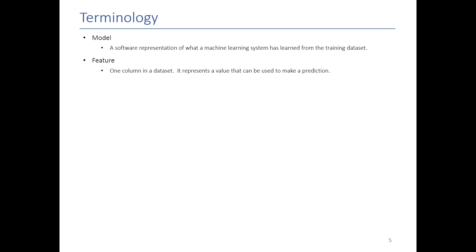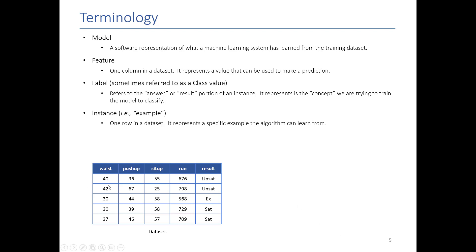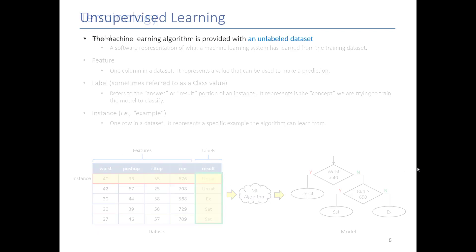Features are the things the computer can look at to make a prediction. The label represents the answer — it's the thing we're trying to predict. For our data set, the labels were the unsat, sat, or excellent ratings. An instance is a row in the data set — for us, an instance could be one particular person's Air Force fitness test scores, including the features as well as the label. We hand this data to a machine learning algorithm and it produces some form of model — for example, if the waist is more than 40 it's unsatisfactory, if less than that we look at the runtime.